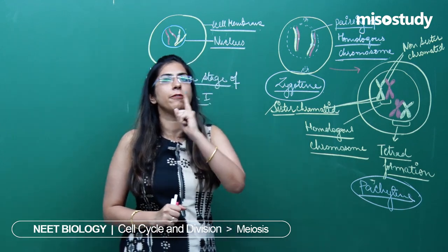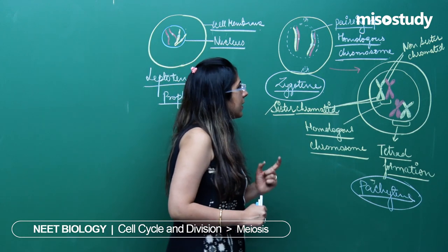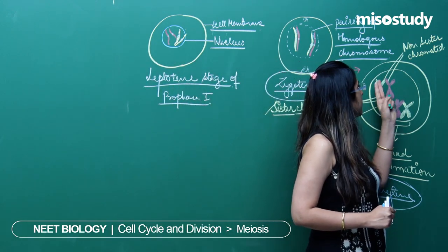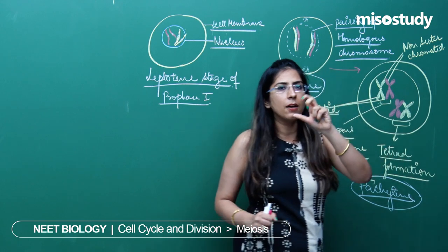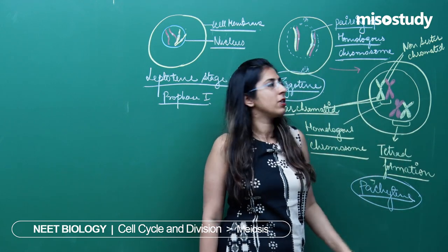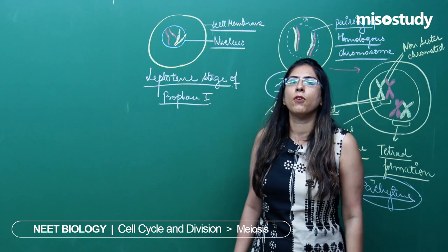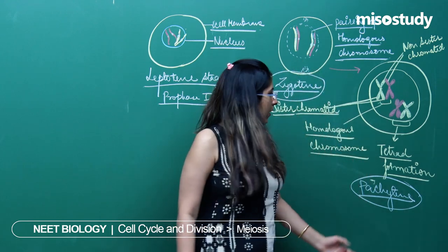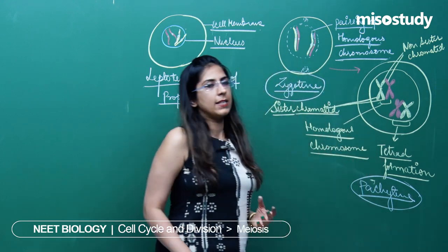This is very important. Whenever there is an exchange of these non-sister chromatids — not the whole but a part of the non-sister chromatids — it is exchanged between the homologous chromosomes, and it leads to the formation of a chiasma. So this was the pachytene stage.